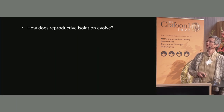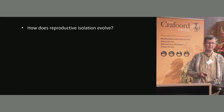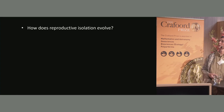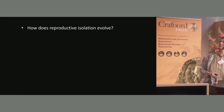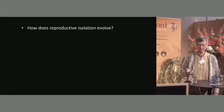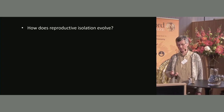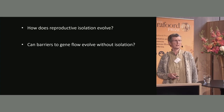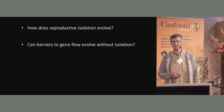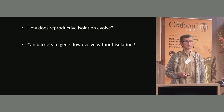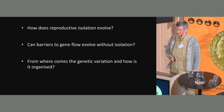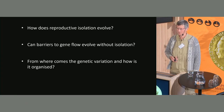We are interested in the same questions as Dolph and many others: How does reproductive isolation evolve? How can barriers to gene flow evolve even without isolation, perhaps? And from where comes the genetic variation and how is it organized?